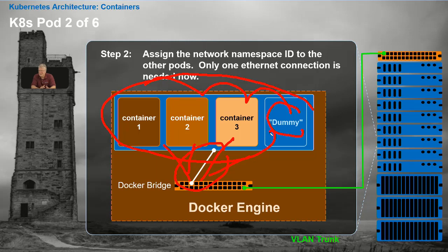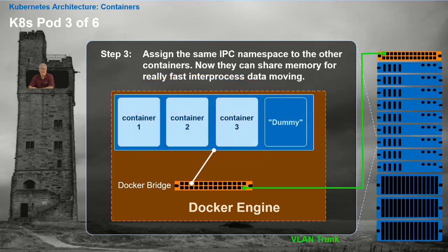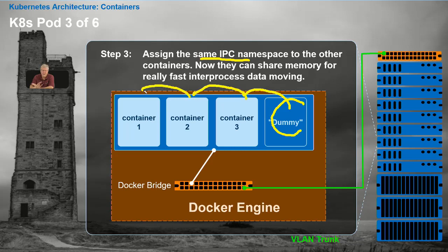You can still call them containers, but this is starting to look more like a pod. The next step is to assign the same IPC namespace to all the other containers. Kubernetes takes the IPC ID of the dummy and assigns it to the other containers. The moment that happens, these containers can now share memory, so communications using IPC — which was impossible before — is now possible.